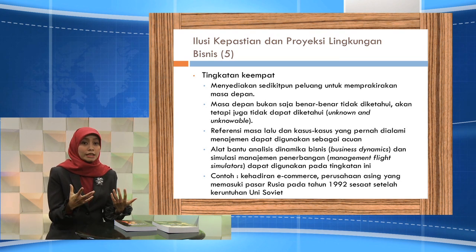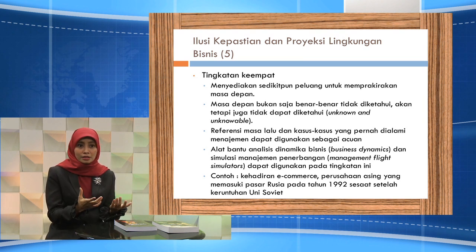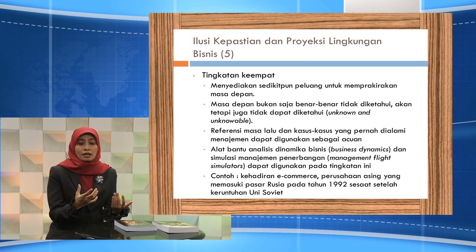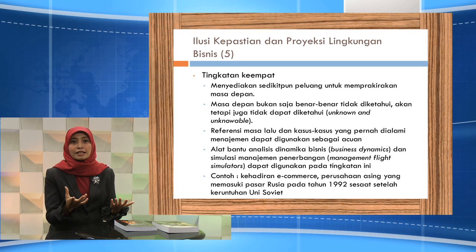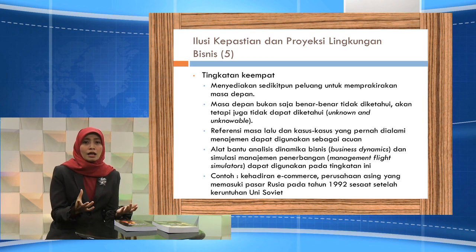Contoh dari kondisi tingkatan ketidakpastian keempat adalah hadirnya e-commerce di dalam lingkungan bisnis yang akhirnya menggoyahkan beberapa perusahaan yang biasanya tidak berbasis internet menjadi harus berbasis internet. Contoh lain adalah perusahaan-perusahaan asing yang berupaya untuk masuk ke pasar Rusia pada sekitar tahun 1992 di mana pada saat itu Uni Soviet runtuh.